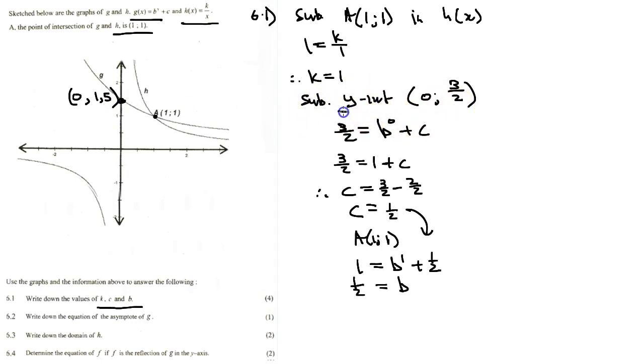Let's look at the next question. It says write down the equation of the asymptote of g. What is an asymptote? An asymptote is an imaginary line that our graph goes close to but does not touch.